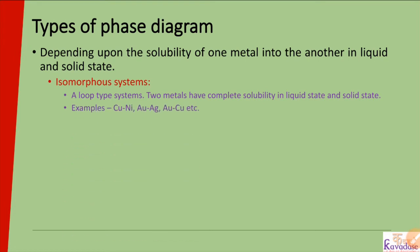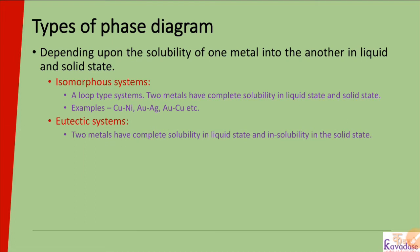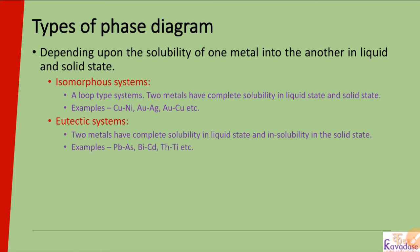Examples of isomorphous systems are copper-nickel, Au-Ag, Au-Cu, etc. The second type is the eutectic system. In the eutectic type of system, two metals have complete solubility in liquid state but insolubility in the solid state — meaning two metals are completely soluble in liquid state but not soluble in solid state.